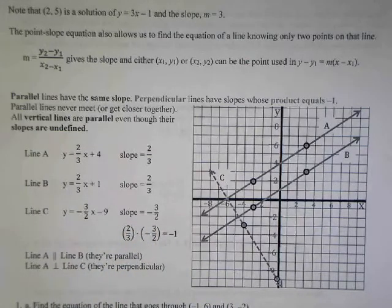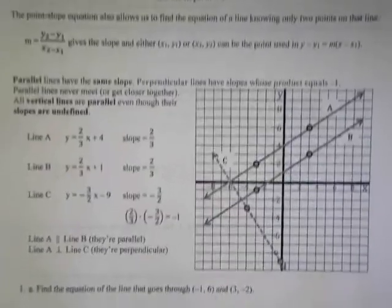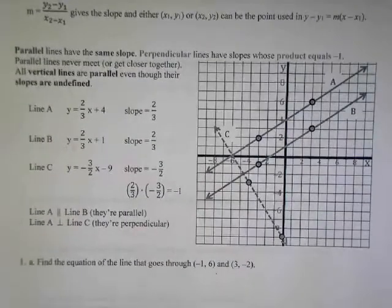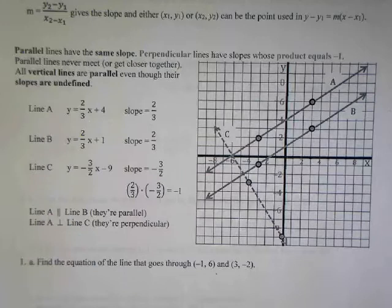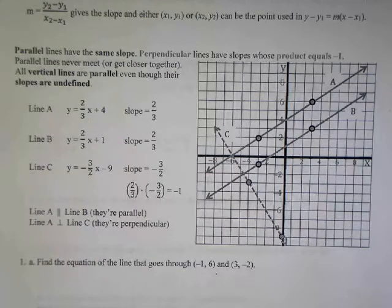Sometimes you will see these symbols in text. If you have two lines like that symbol, it means they are parallel. If you have the upside-down T symbol, that means they are perpendicular.